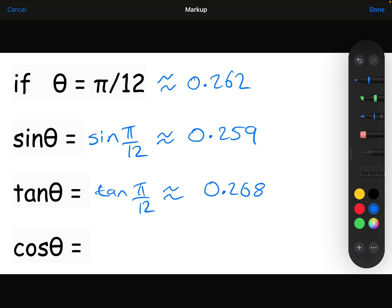Cos, if I type cos π over 12 in, that is equal to three decimal places to 0.966.